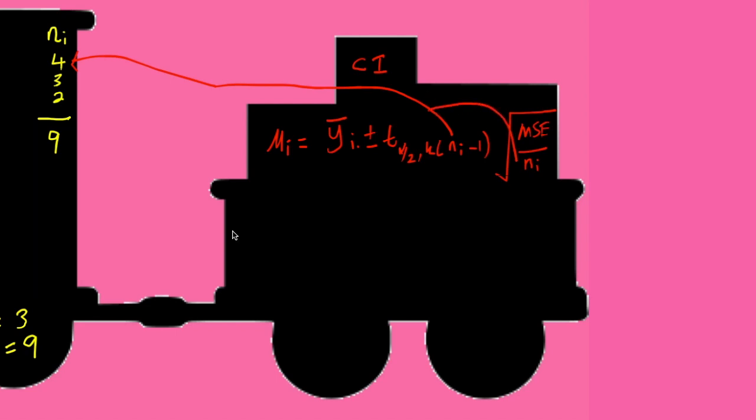And to calculate the confidence interval for the difference between two treatment means Mu I minus Mu J, we take Y bar I dot minus Y bar J dot as the one for equal samples plus minus T alpha over 2 N minus K similar to when you have equal samples multiplied by MSE over NI plus MSE over NG where I and J would be the levels of treatment that you are interested in.